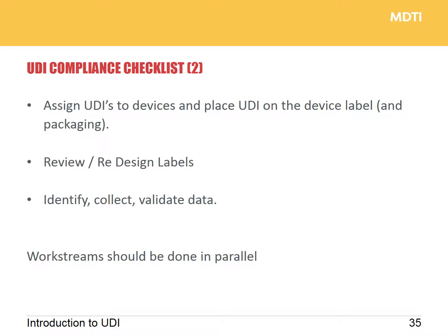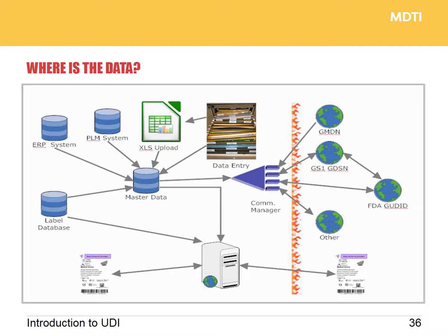Once you have your GS1 numbers, identify what is a base package, allocate a number to that base package, and then look to start placing that on device labeling — review and redesign labels for date formats, etc. The key and biggest job is to identify, collect, and validate the core data set. We would recommend that these work streams should, wherever possible, be done in parallel. In regards to the data you'll require for GUDID and UDI, where is that data going to be? Some will be in XML spreadsheets, some on paper, some in ERP systems. Even if you have the data, it's not necessarily in the correct format for sending to the GUDID. Gathering this data together is the longest job you will have for UDI compliance.